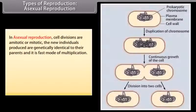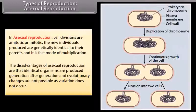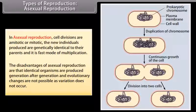In asexual reproduction, cell divisions are amitotic or mitotic. The new individuals produced are genetically identical to their parents, and it is a fast mode of multiplication. The disadvantages of asexual reproduction are that identical organisms are produced generation after generation, and evolutionary changes are not possible as variation does not occur.